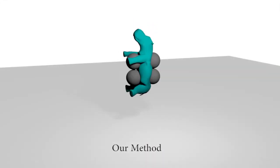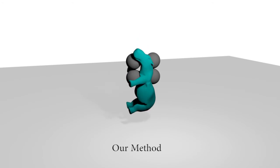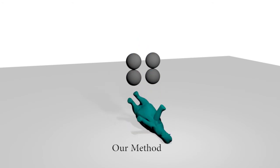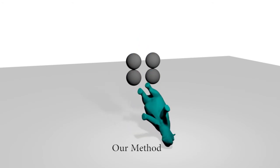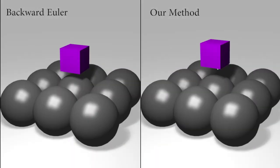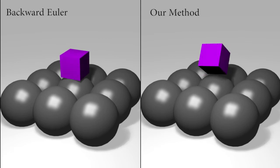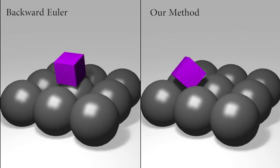We also support basic collision handling. Here we see an elastic hippo impacted by a few spheres. Backward Euler results in very rigid-looking collisions, whereas our method can produce more elastic bounces.